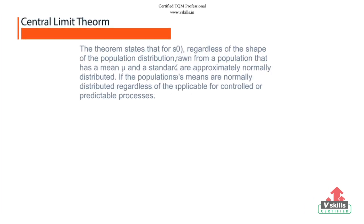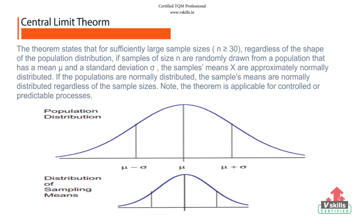The central limit theorem states that for sufficiently large sample sizes, regardless of the shape of the population distribution, if samples of size n are randomly drawn from a population that has a mean mu and a standard deviation sigma, the samples' means x are approximately normally distributed. If the populations are normally distributed, the samples' means are normally distributed regardless of the sample sizes. The theorem is applicable for controlled or predictable processes.